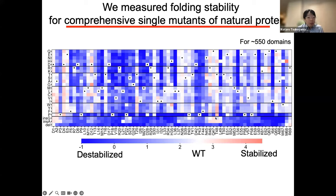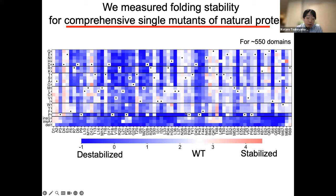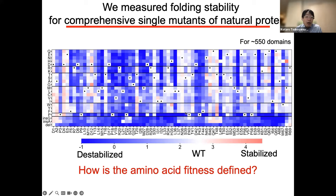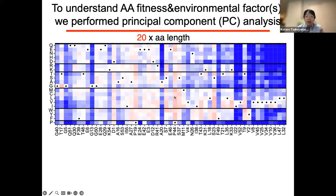I'm now showing you one example. In this heat map, the X-axis represents each position of the domain, the Y-axis represents the mutated amino acid, and each color represents the folding stability. White means the wild-type folding stability, red means the stabilized mutant, and blue means the destabilized mutant. Each dot represents the wild-type amino acid for each position. Using this kind of dataset, we investigated how amino acid fitness is defined. We have a high-dimensional dataset with 20 dimensions in terms of amino acids. It is somewhat difficult to analyze this kind of huge high-dimensional data, so we compress it into low-dimensional data using PCA, or principal component analysis.